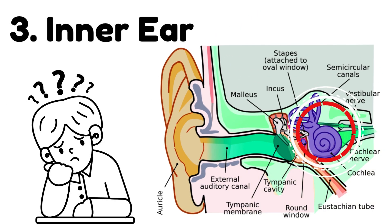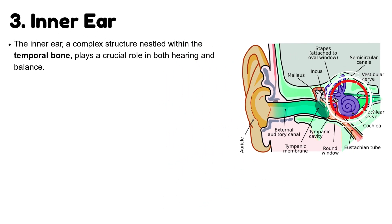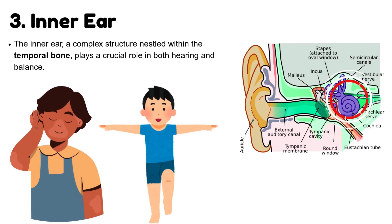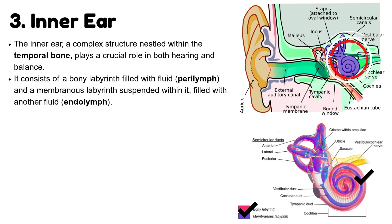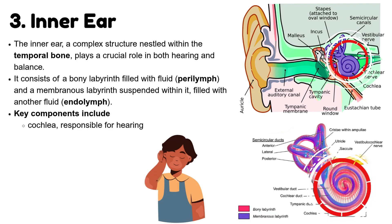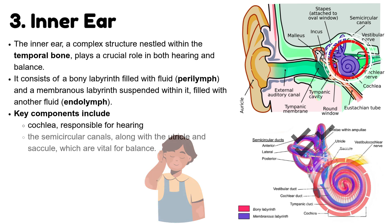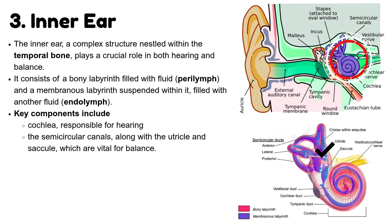The last part of the ear is the inner ear. The inner ear, a complex structure nestled within the temporal bone, plays a crucial role in both hearing and balance. It consists of a bony labyrinth filled with fluid called perilymph, and a membranous labyrinth suspended within it, filled with another fluid called endolymph. Key components include the cochlea, responsible for hearing, and the semicircular canals, along with the utricle and saccule, which are vital for balance.